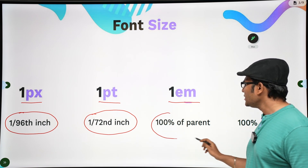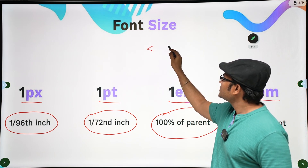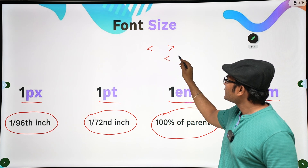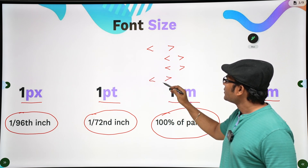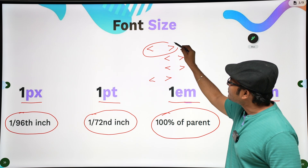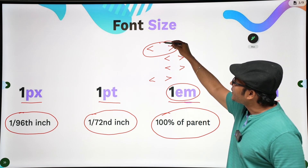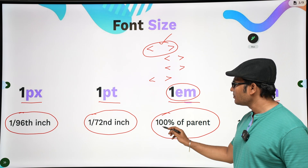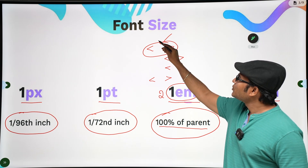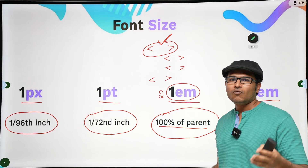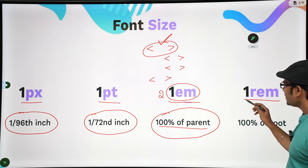One em means 100 percent of the parent. What does that mean? Let's say there is an element and inside that element there is one more element - the outer one is the parent element. One em means whatever size is applied to the parent, 100% of it. If you write 2em, it means 200% of the parent - double. 1.5 means 1.5 times the parent.